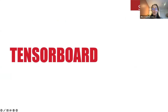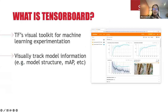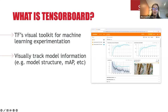The final piece of the puzzle is TensorBoard. We've talked about object detection, and TensorFlow is the tool we use to train those models. TensorBoard is the tool that helps us run experiments and understand the models we're training. TensorBoard is a toolkit developed by the same people who developed TensorFlow, and it allows us to monitor training and evaluate our trained models through a visual interface.